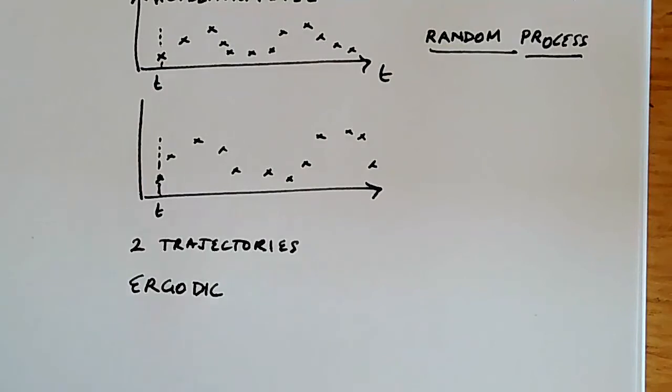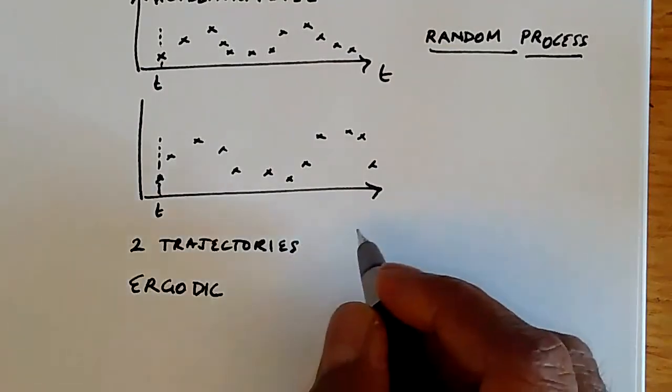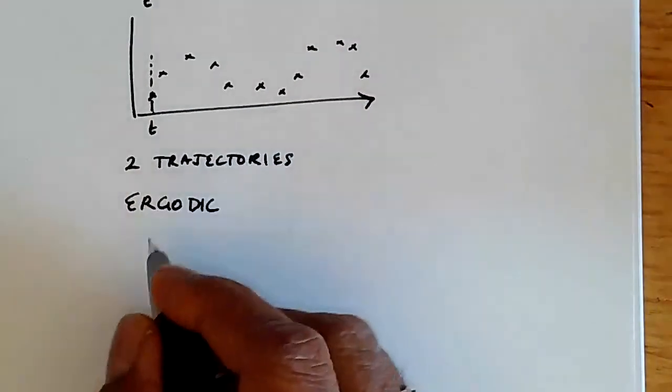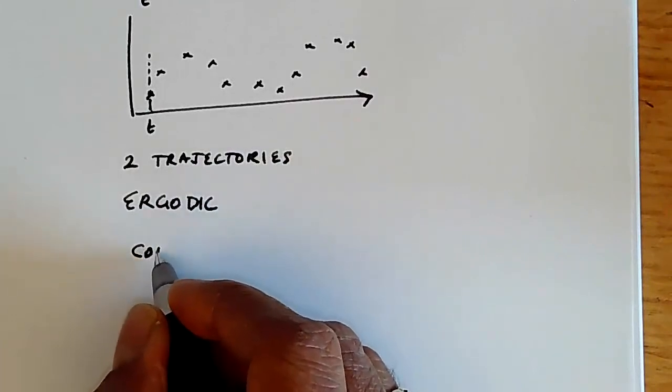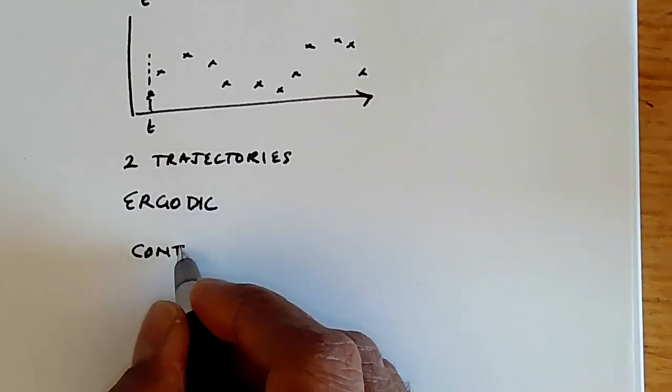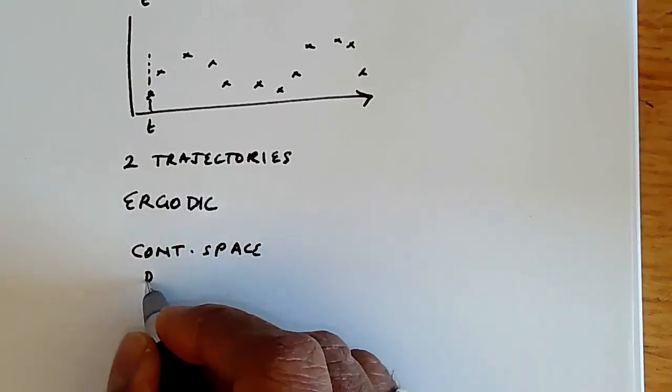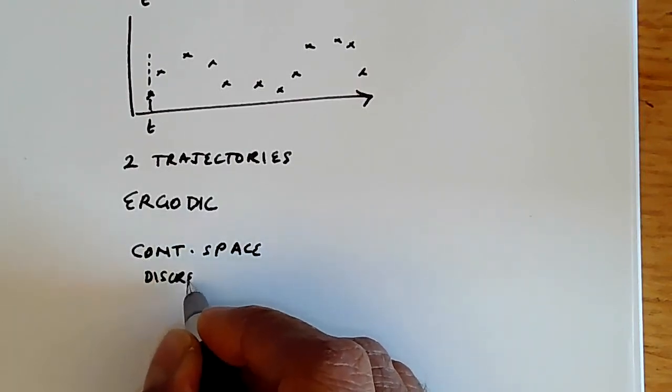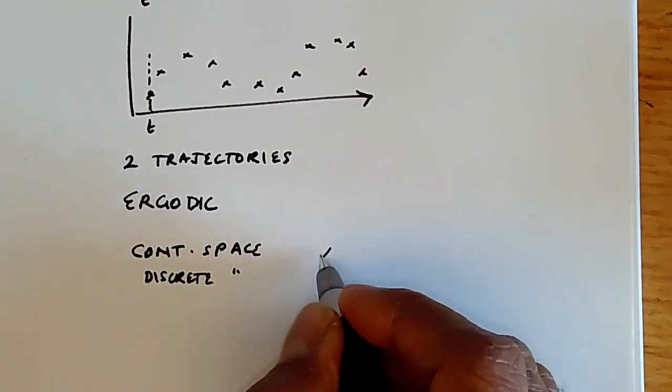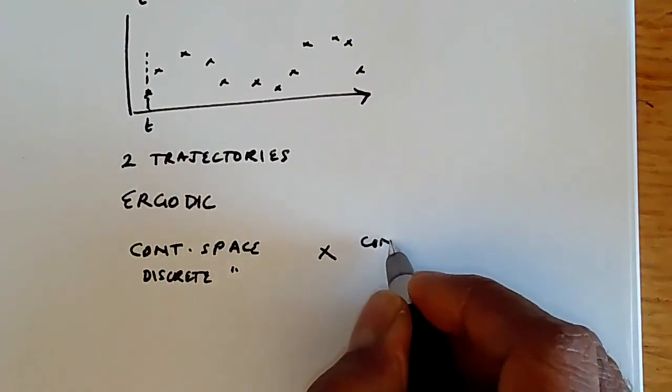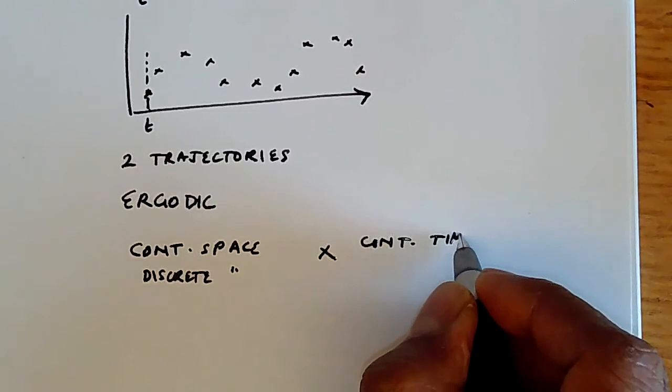Because these are stochastic processes, it's quite clear that we can have essentially four kinds of simulations, which are going to be continuous space or discrete space, and then the cross product with continuous time and discrete time.